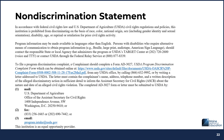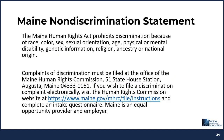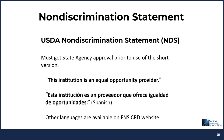Here is the federal nondiscrimination statement. Translated versions of the nondiscrimination statement are available on the FNS website. Here is the Maine nondiscrimination statement. There is also a USDA short statement, but you must get state agency approval prior to use of this short version. The short version is: 'This institution is an equal opportunity provider.' Other languages for this statement are available on the FNS Civil Rights website. You have blanket approval to use this short statement on your menus, but you must get state agency approval to use it on other materials.